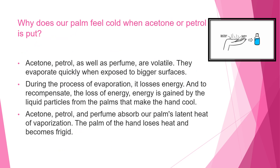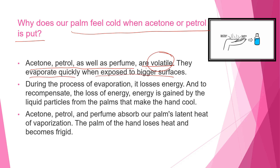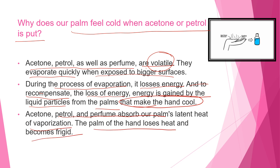Why does our palm feel cold when we put acetone or petrol on it? Acetone, petrol, and perfume are volatile — they evaporate quickly when exposed to larger surfaces. During evaporation, they lose energy, and to recompensate this loss, energy is gained from the palms, making the hand feel cool. Acetone, petrol, and perfume absorb the palm's latent heat of vaporization, so the hand loses heat and becomes cold. Please refer to the earlier video on latent heat of vaporization for more detail.